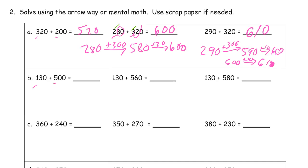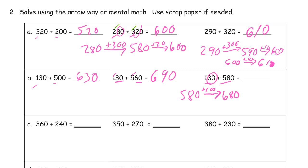For 130 plus 500: we just add the hundreds — 100 plus 500 is 600, then the 30 gives 630. You might see the tens 30 and 60 add to 90, and 100 to 500 is 600, so it's 690. For something more complicated: start with the large number first — since you can change the order of the addends, start with 580. Add the 100 first for 680, then add the 30. Since we have an 80, I'm thinking 20 gets us to 700, and then 10 more for 710.